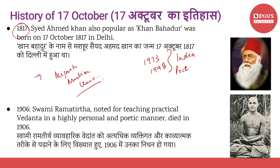Ab chalke dekhte hain which is the second important event for this date. And this happened in 1906, jab Swami Ramteerth ka nidhan hua tha. Swami Ramteerth, jinka dousra naam hai Ram Swami, yani ki ye Ram Swami ke naam se bhi bhot zyadha popular rahe hain. Yeh Indian teacher, Indian guru the, who used to teach the Hindu philosophy of Vedanta. In fact, he was one of the very few people jo US gaye the in 1902, Vedanta ki philosophy ke upar logon ko batane aur iske baare mein prachar karne ke liye.